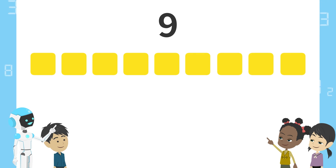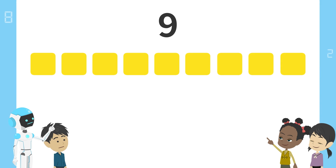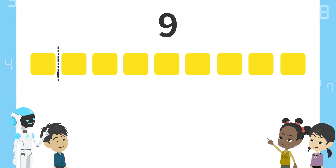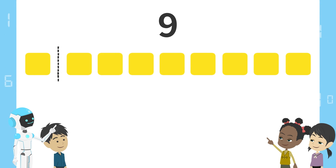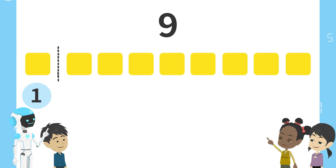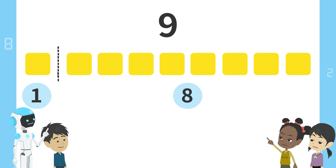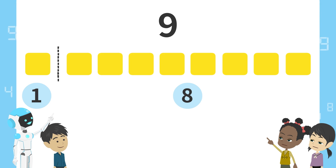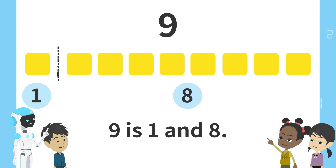Here are 9 blocks. Yes. If we split these blocks this way, what would happen? 1 block on the left and 8 blocks on the right. Yes. We can say, 9 is 1 and 8. 9 is 1 and 8.